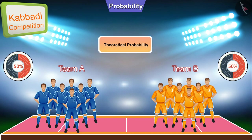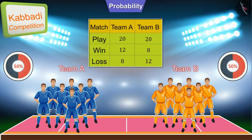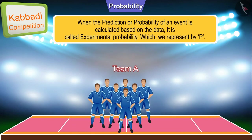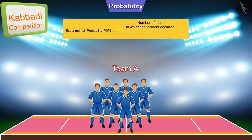Now, if we assume that both teams have already played 20 matches, out of which Team A won 12 matches. In such a situation, we will select Team A in the prediction of the winning team. The probability of an event calculated based on data is called experimental probability, which we represent by P. Experimental probability is the ratio of the number of trials in which the event has occurred to the total number of trials.